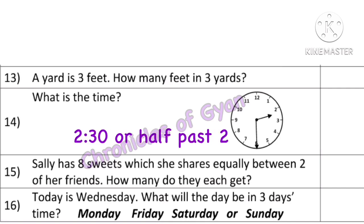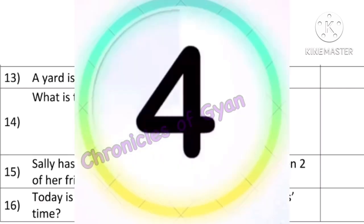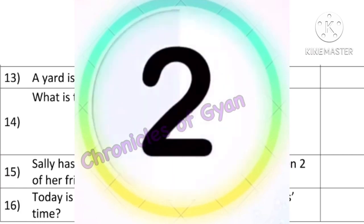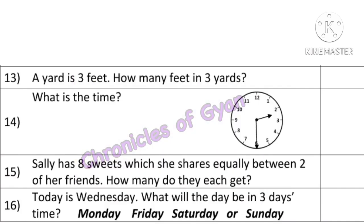Question 15: Sally has 8 sweets which she shares equally between 2 of her friends. How many do they each get? Sally has 8 sweets and she shares among 2 people. That means 8 divided by 2 is equal to 4. Another method: 4 plus 4 — one friend gets 4 and the other friend also gets 4. So each friend gets 4.